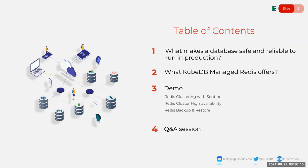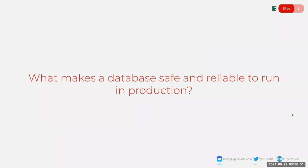First I will discuss what makes a database safe and reliable to run in production grade. Then we will see what KubeDB Redis offers us. Then I will demonstrate some of the features from our KubeDB Redis cluster, like Redis clustering with sentinel, then we are going to see high availability for our Redis cluster, then backup and restore features from Stash, which is also an AppsCode product. Then there will be a Q&A session.